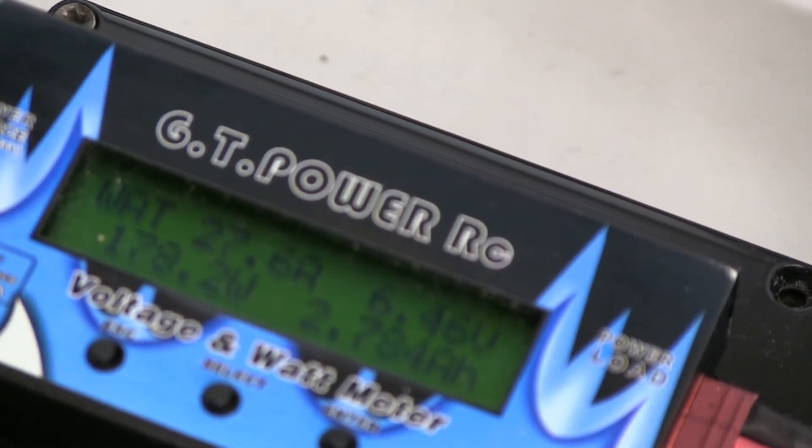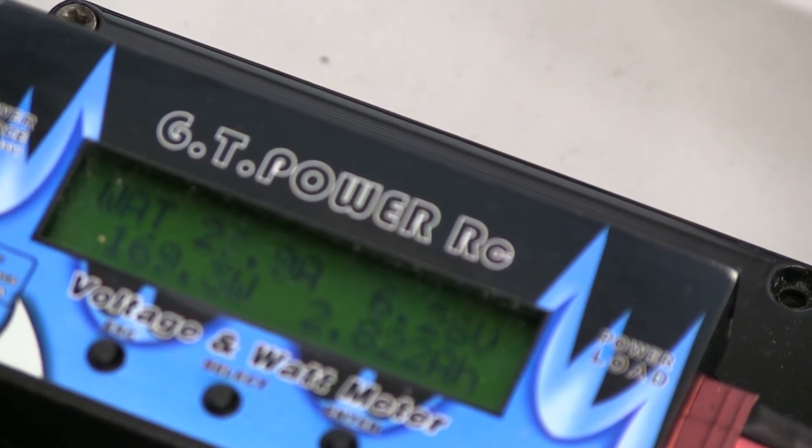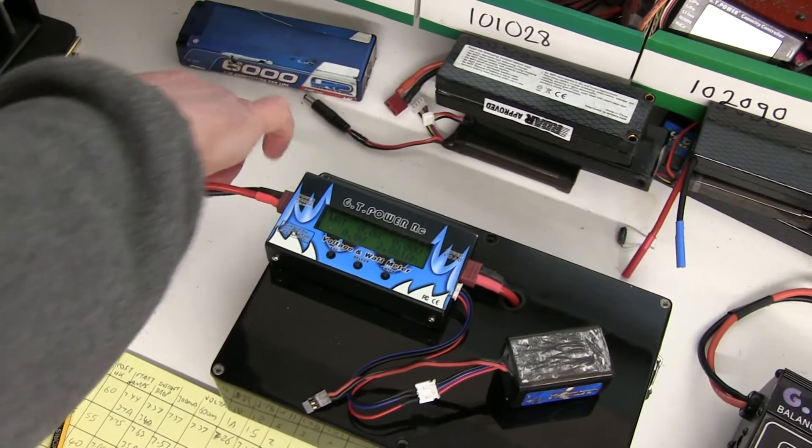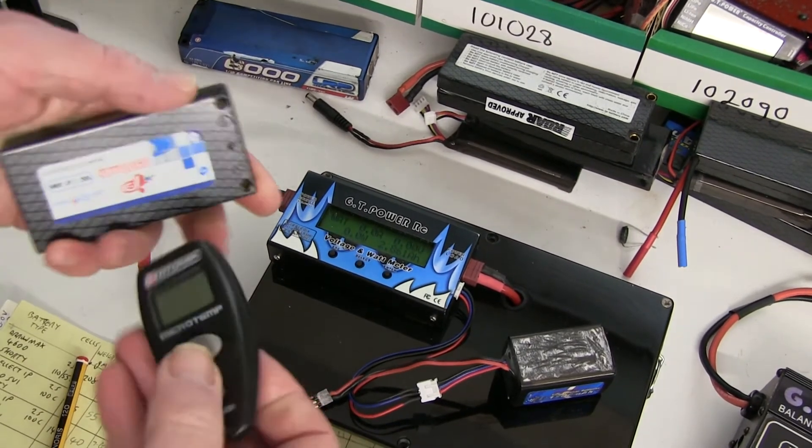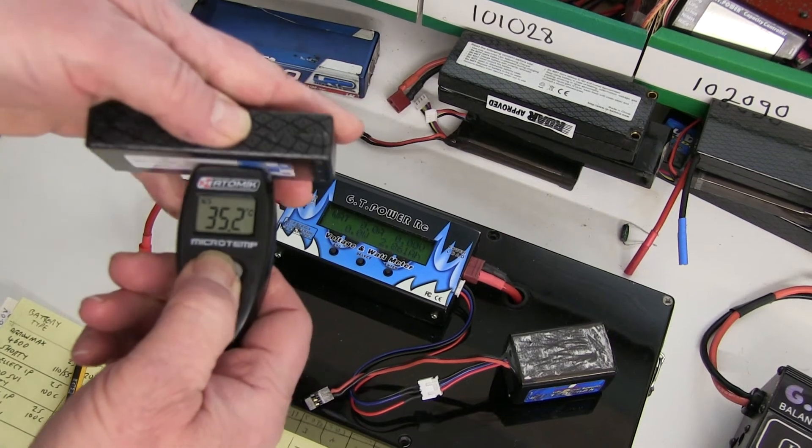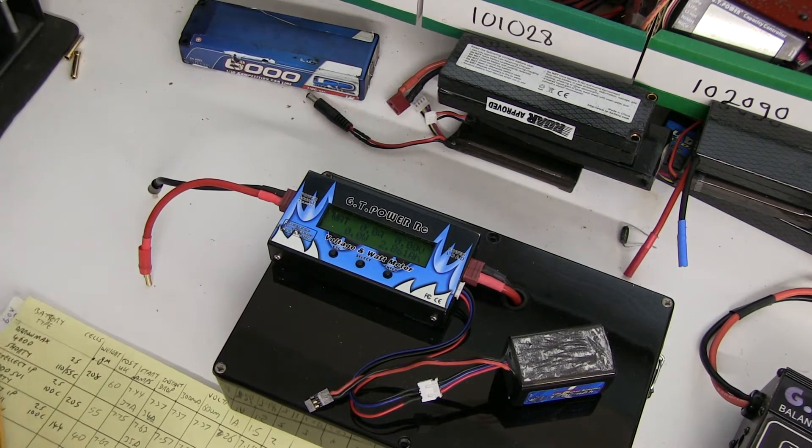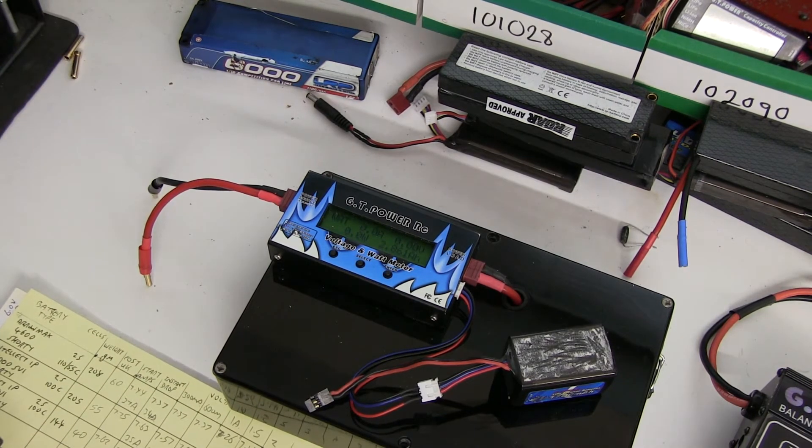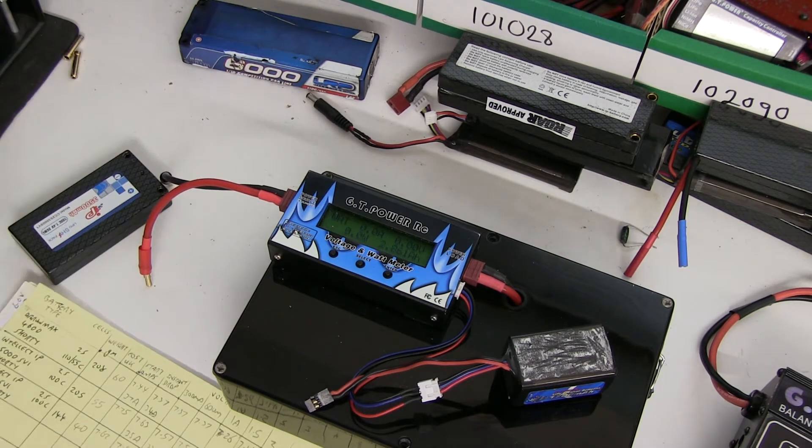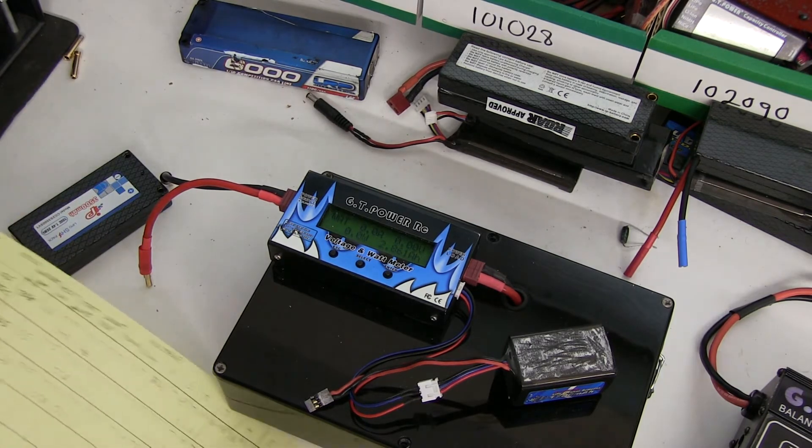The 3500 IP is struggling a bit. It hasn't even got to 3000 milliamps and the voltage is already dropping. 6.26 and there, six volts. It was at 2.86 only. Let's check the battery - it's warm but it's about 35 degrees, the same as the others. But the capacity is not good, nor was the results here. Let's look at the results now.